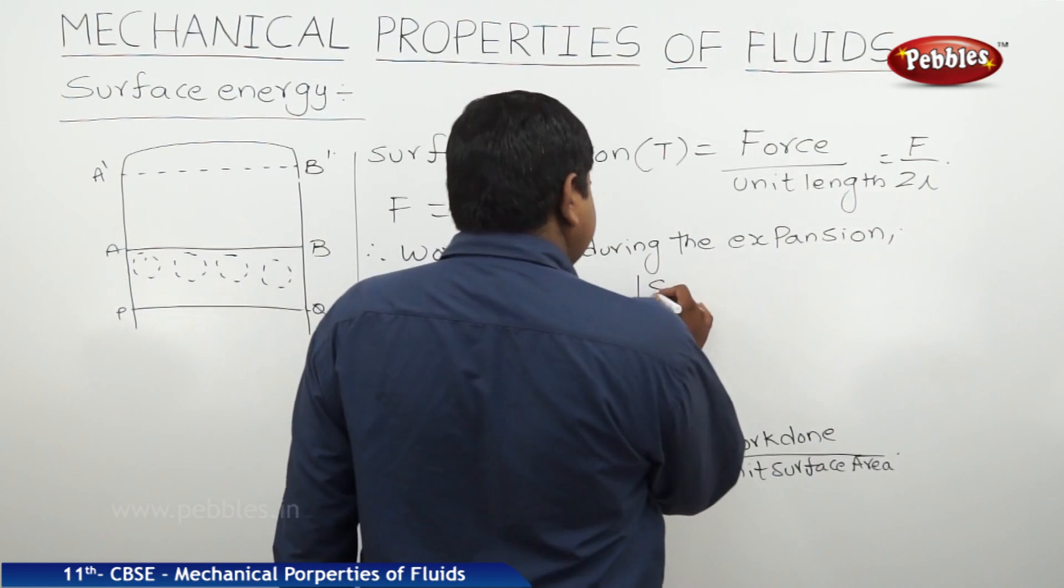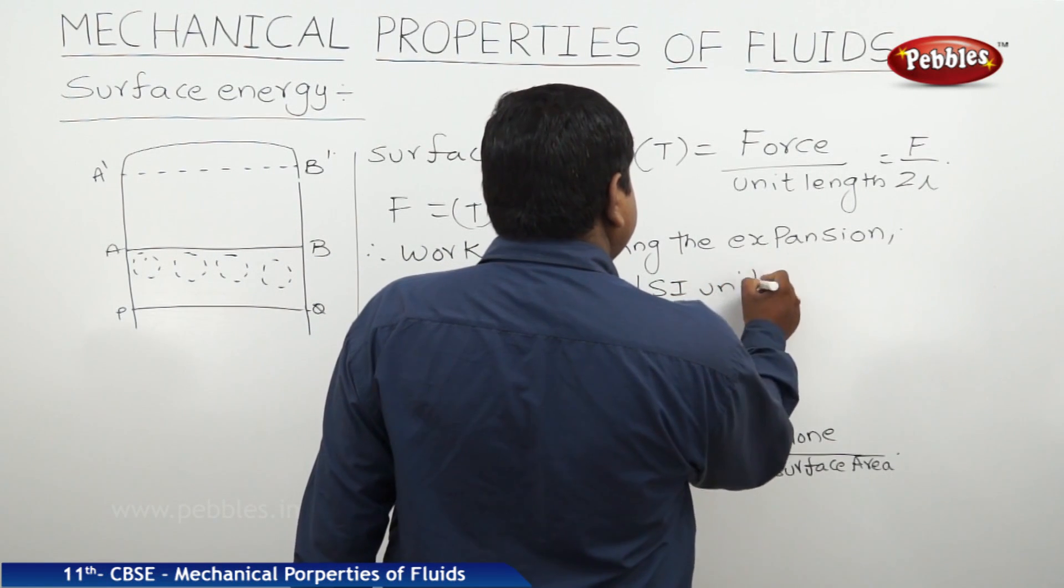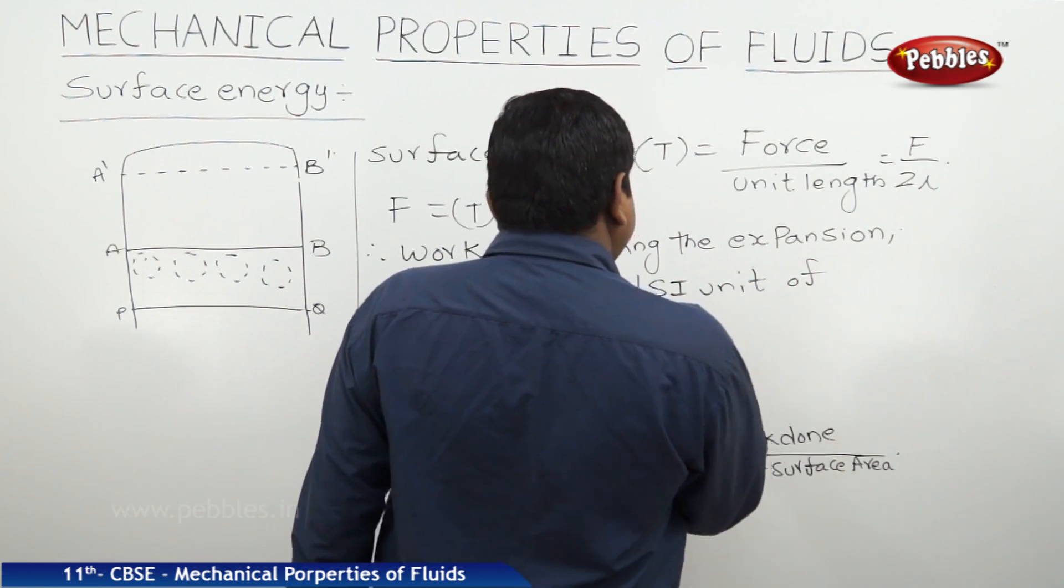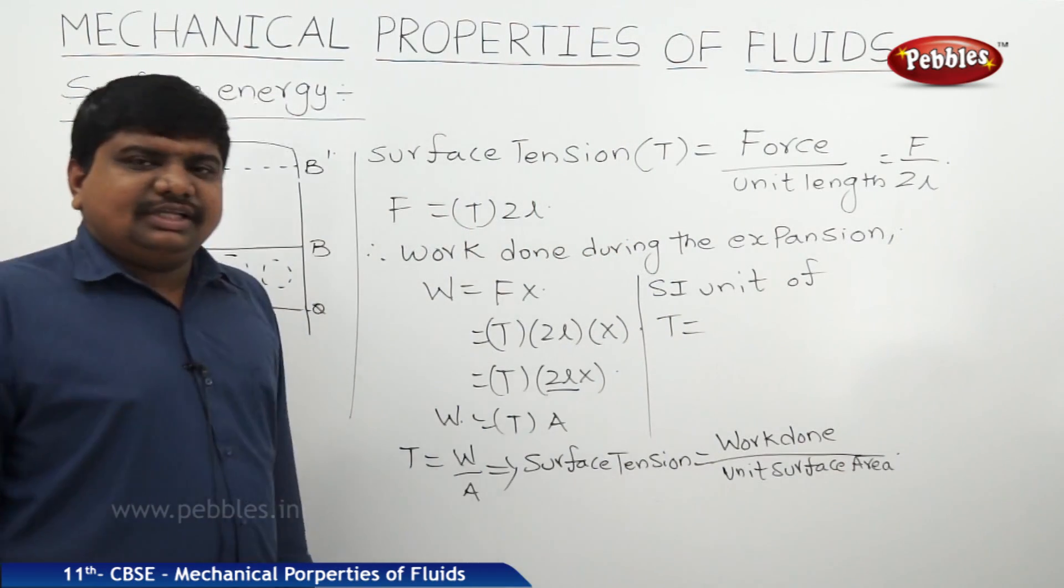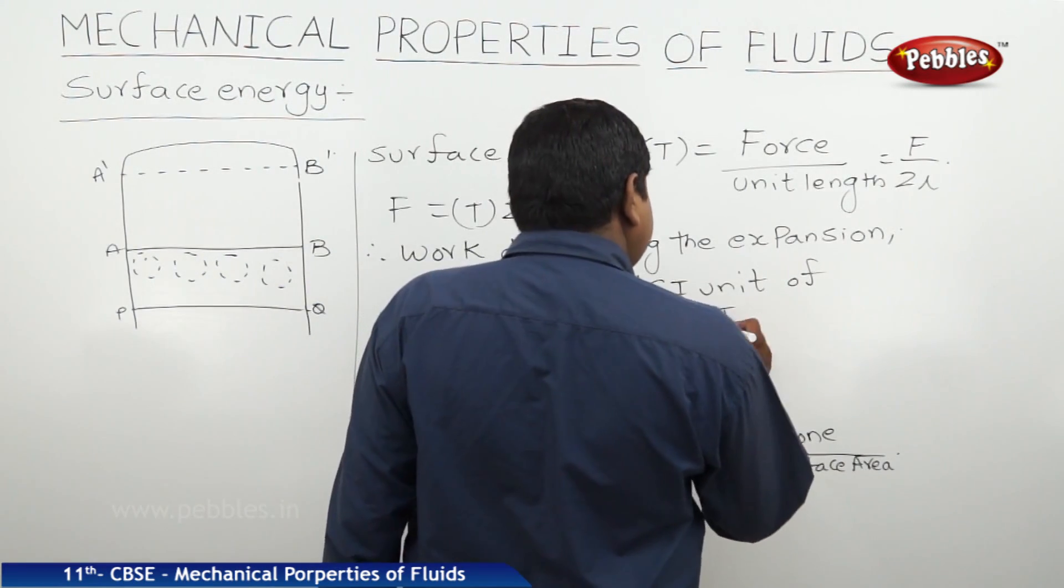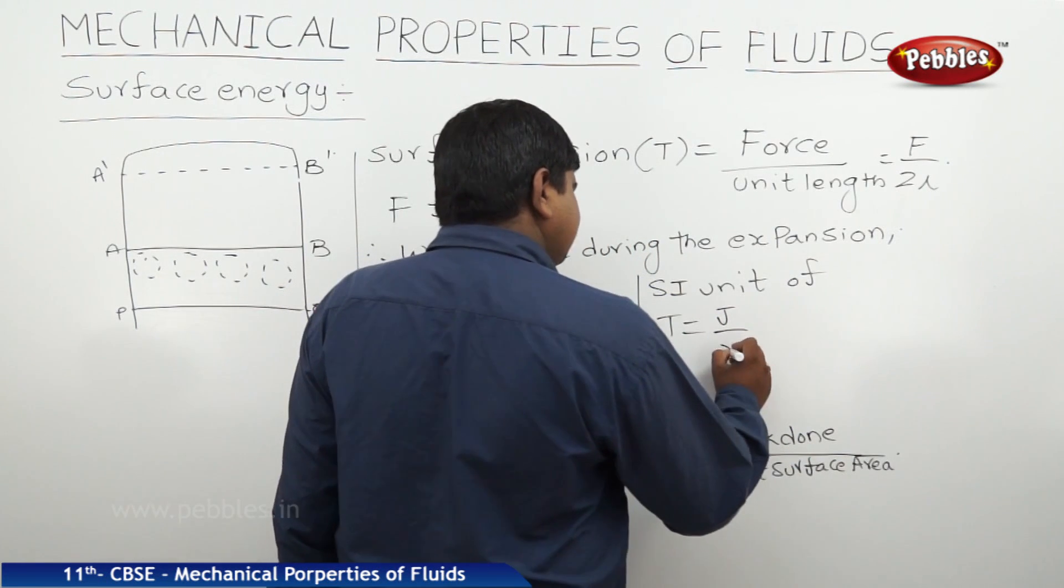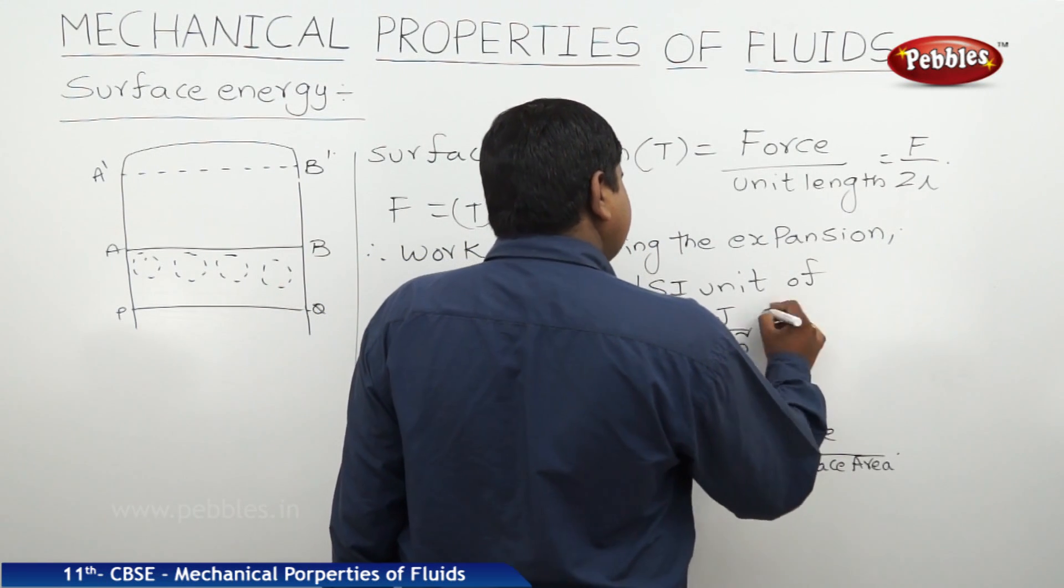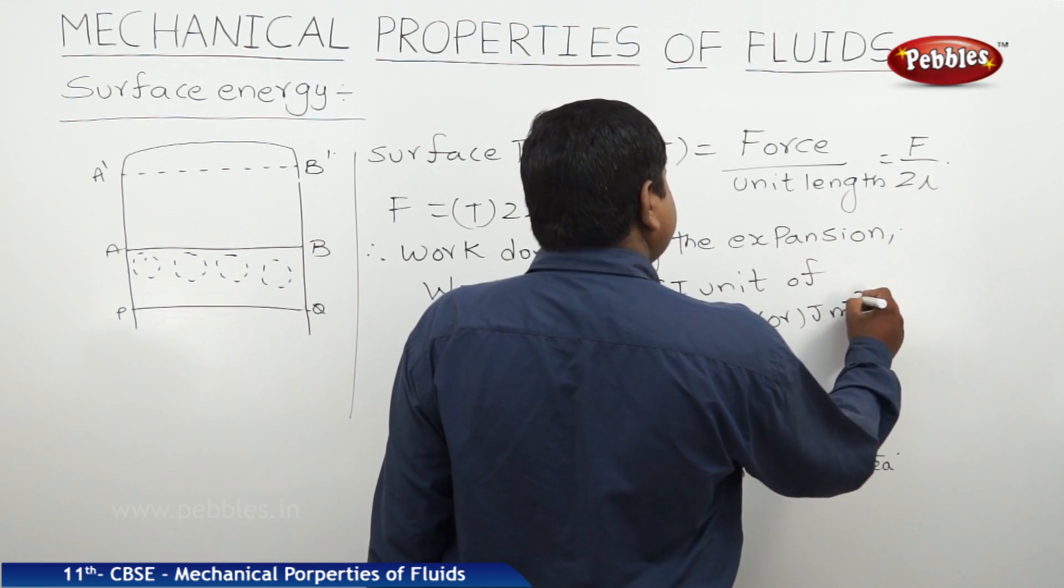The SI unit of surface tension is equal to, SI unit of work done is joule and SI unit of surface area is meter square, so it can be written as joule meter power minus 2 also.